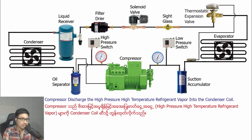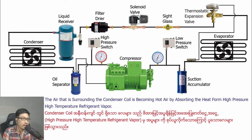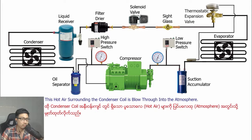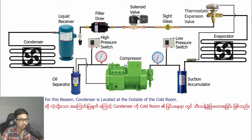The compressor discharges the high pressure, high temperature refrigerant vapor into the condenser coil. The air surrounding the condenser coil becomes hot air by absorbing the heat from the high pressure, high temperature refrigerant vapor. This hot air surrounding the condenser coil is flowed out into the atmosphere. For this reason, the condenser is located at the outside of the cold room.